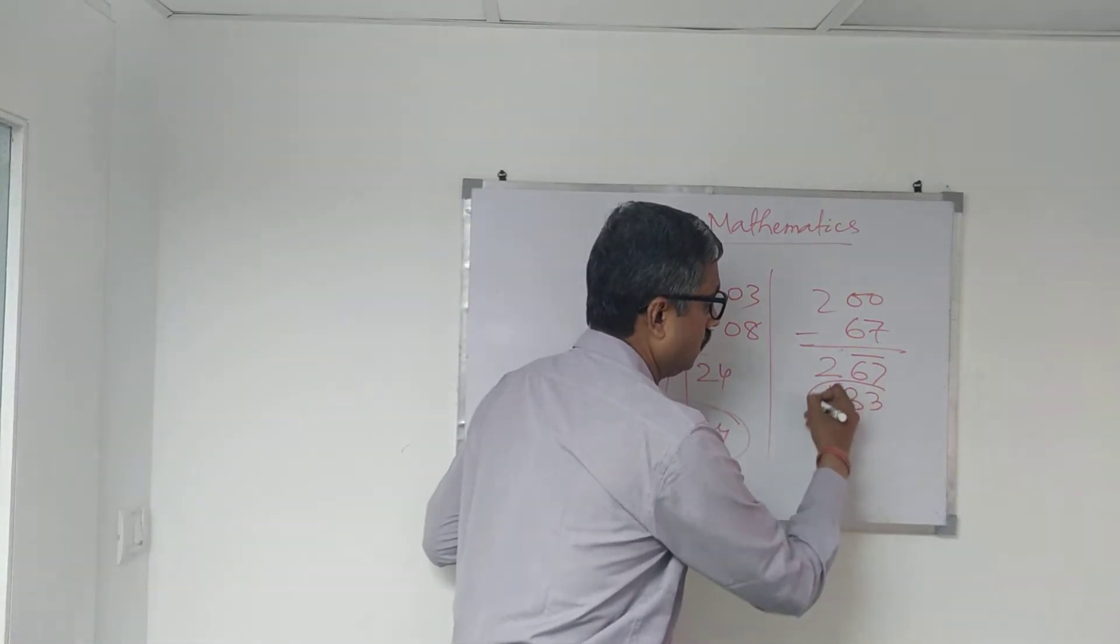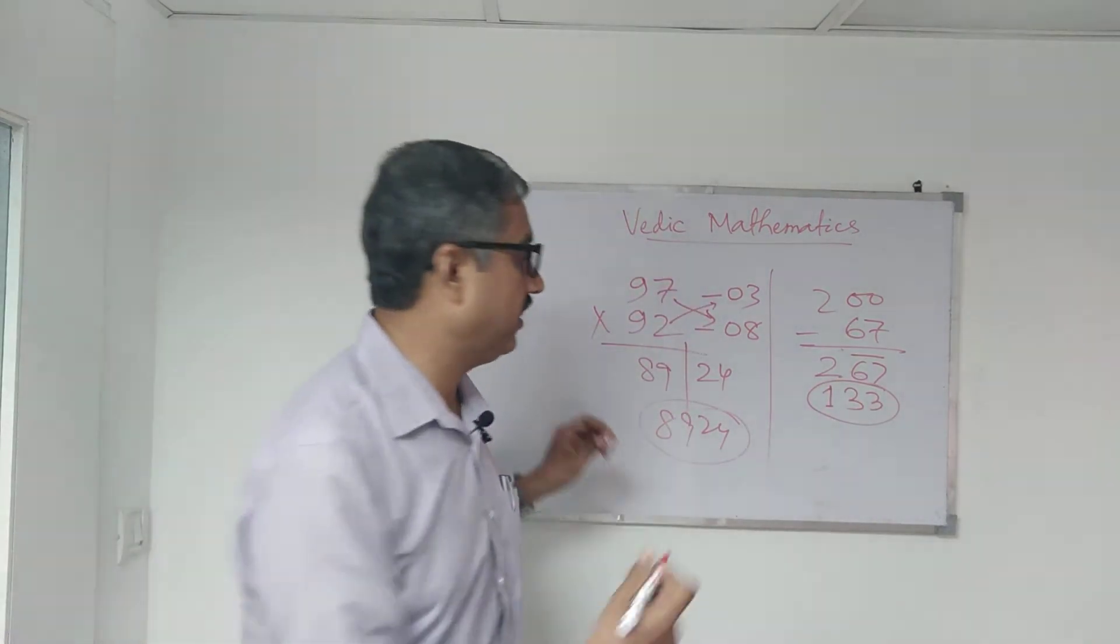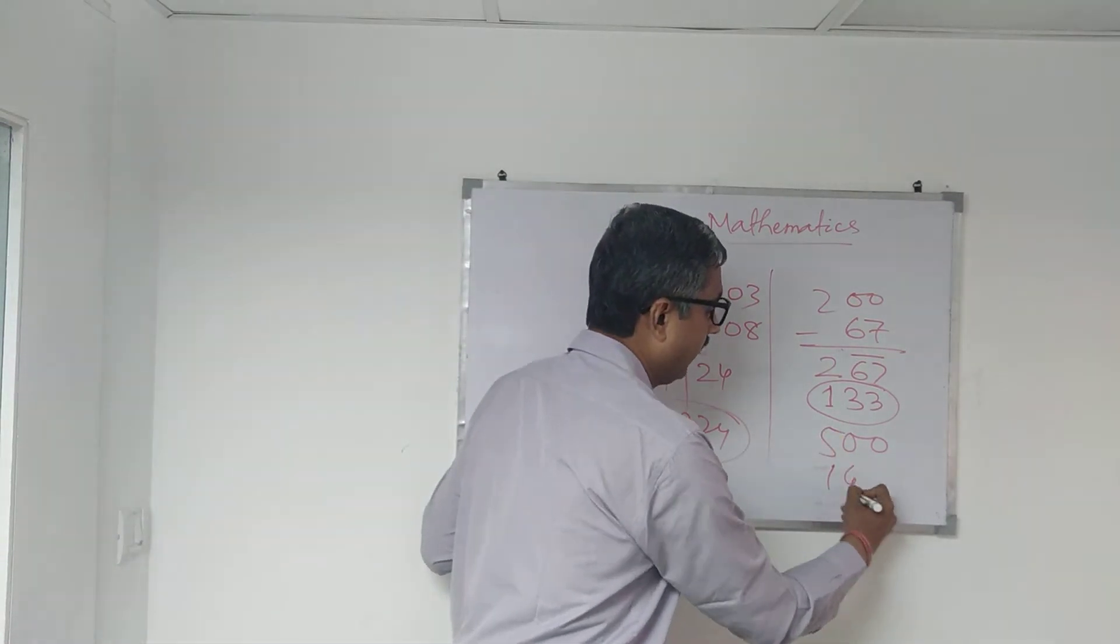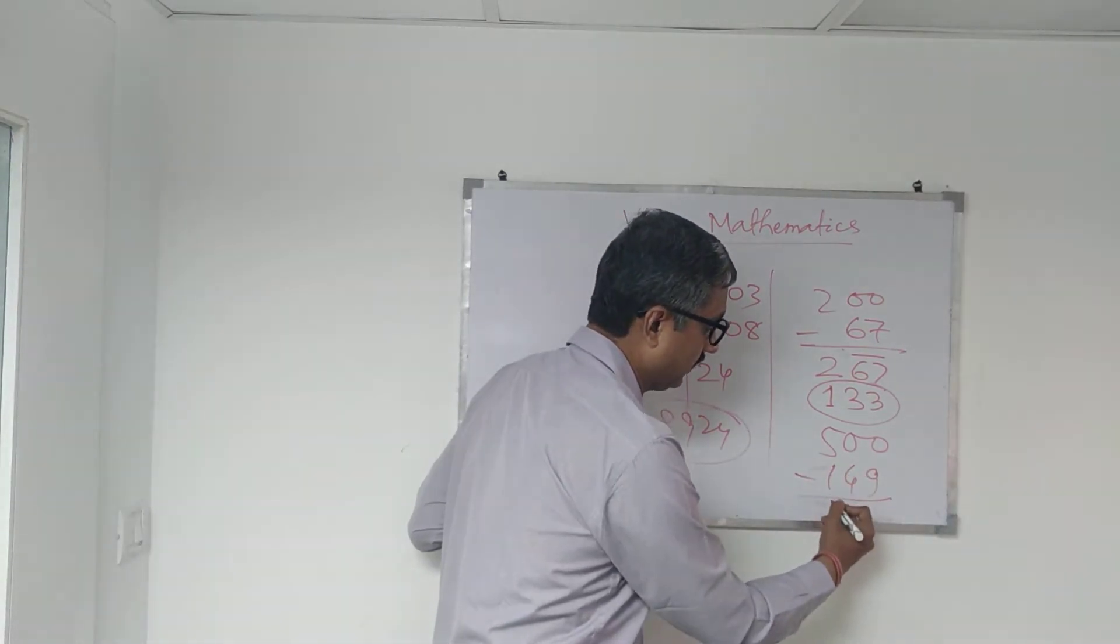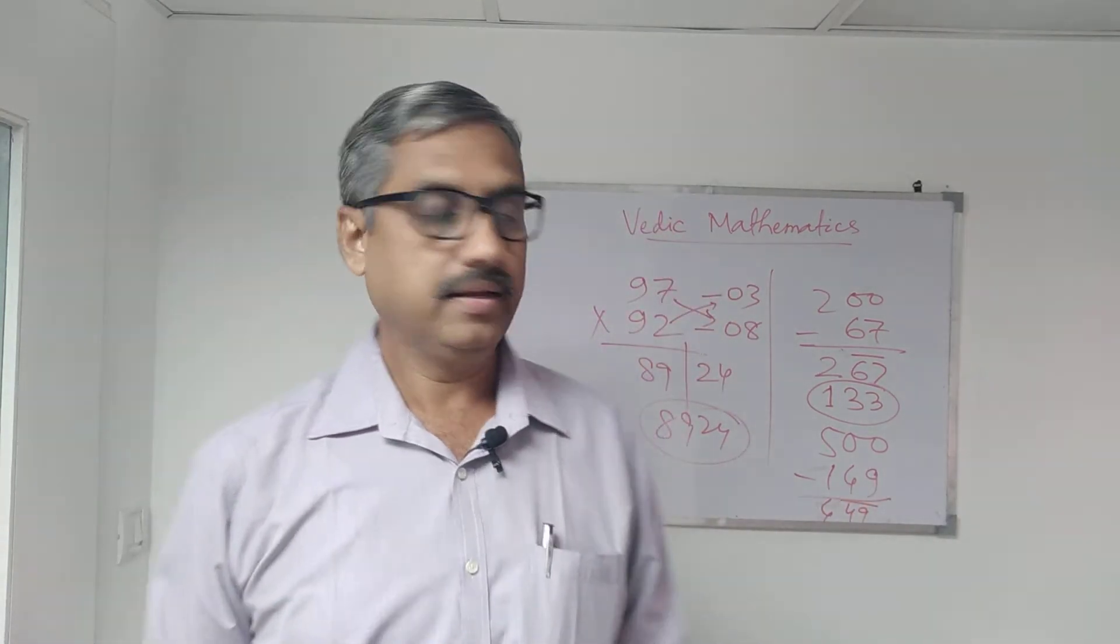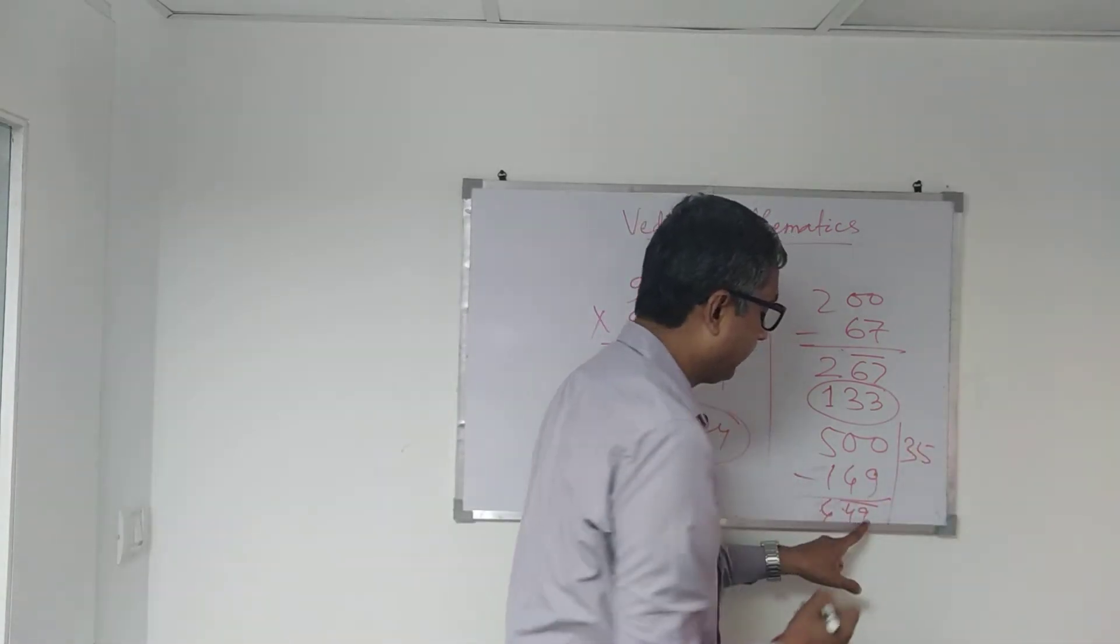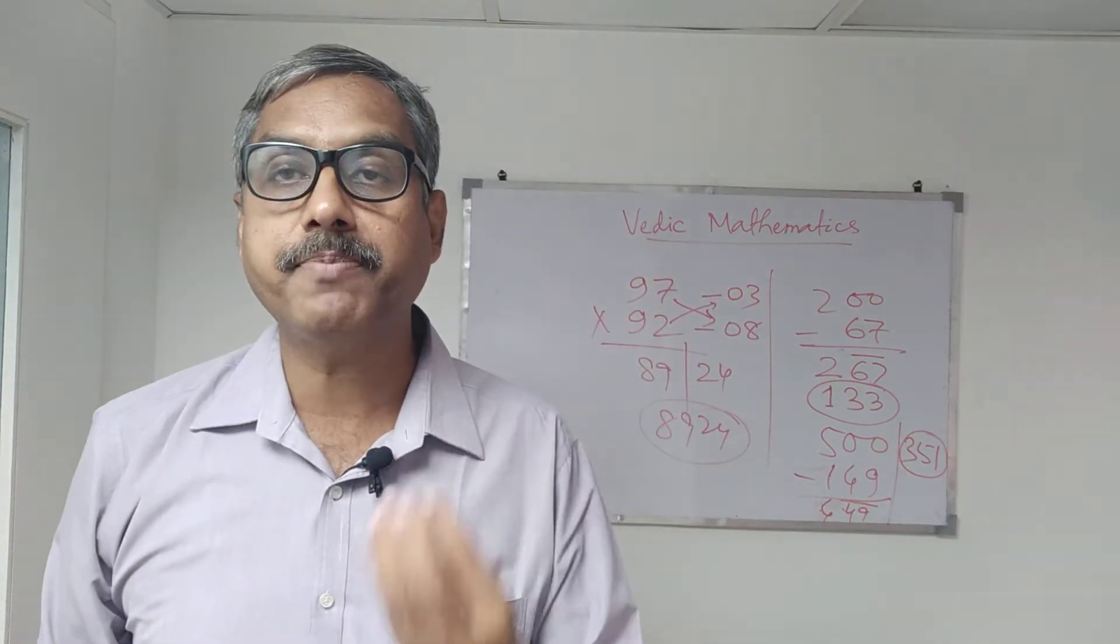Easily he can do. Suppose 500 ka note diya and he bought something of 149 suppose. So this is very easy. 5 minus this 1 is 4 and this is 49 is bar. Now easily we can get one less than 4 is 3 and 9 minus 4 is 5 and 10 minus 9 is 1. So he'll be getting 351.